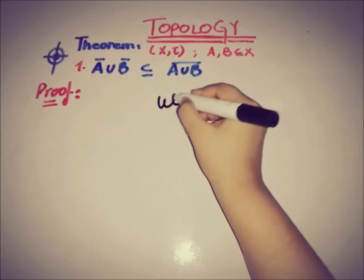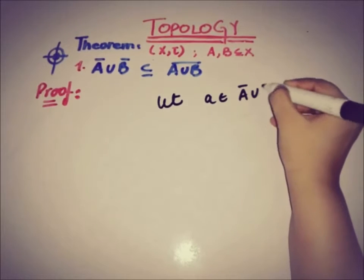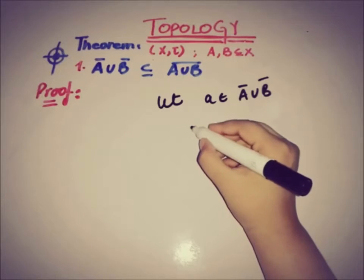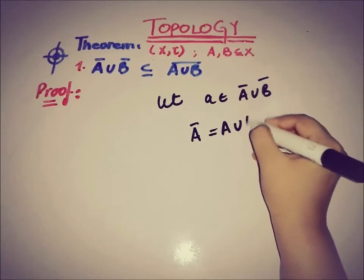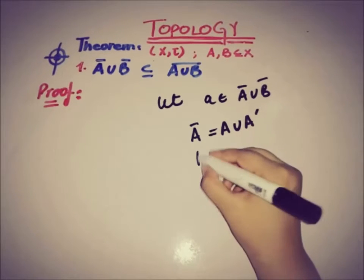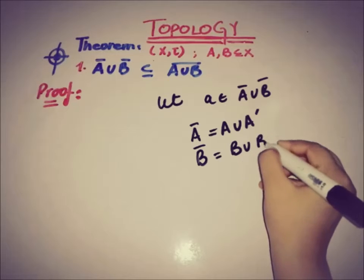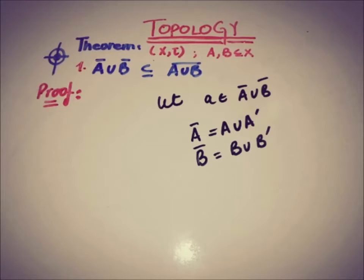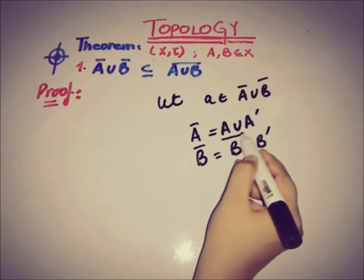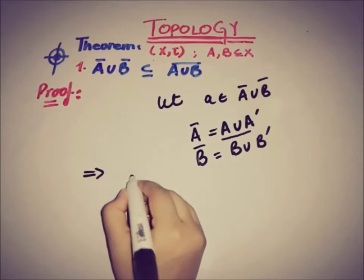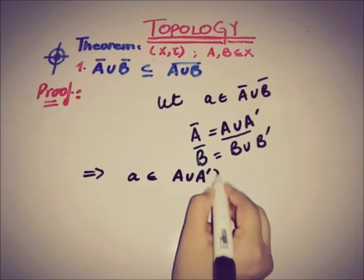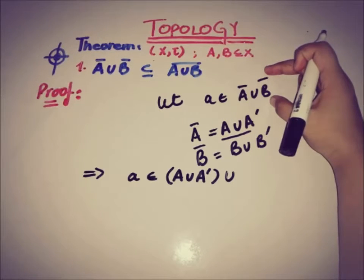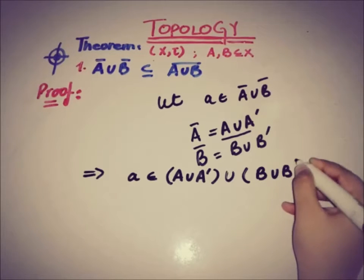Let's take an element 'a' that belongs to A closure union B closure. We know the relation of the closure with the set of accumulation points: A bar equals A union A prime, and B bar equals B union B prime. So if 'a' belongs to A bar, then 'a' is a member of A union A prime; and if 'a' belongs to B bar, then 'a' is also a member of B union B prime.